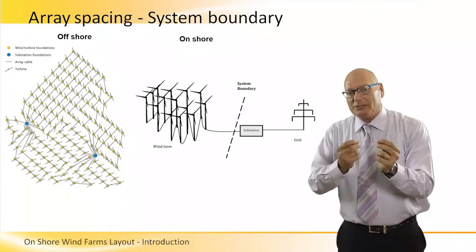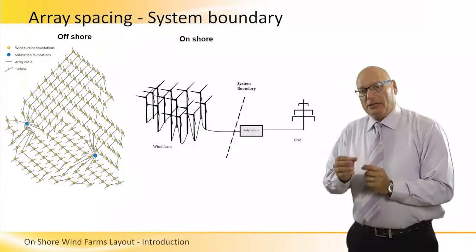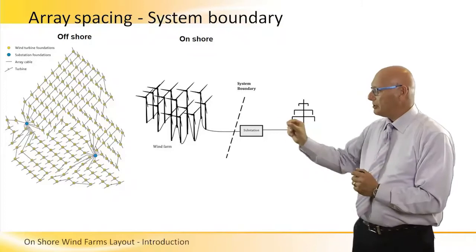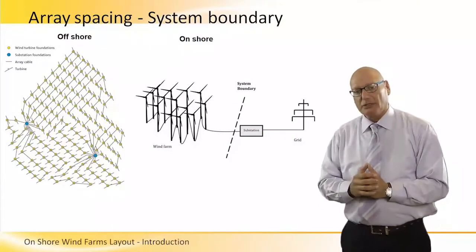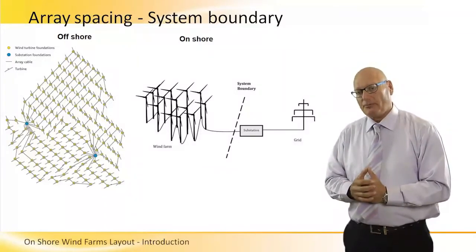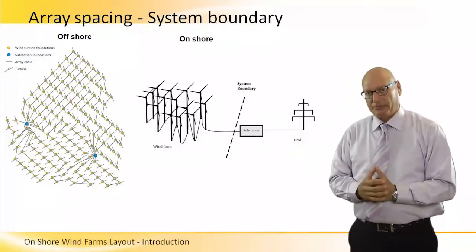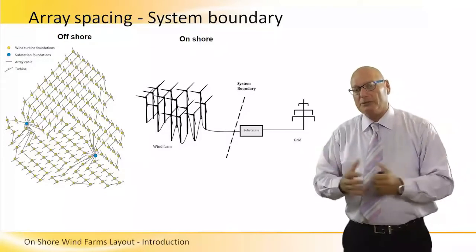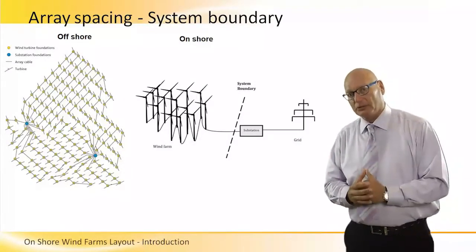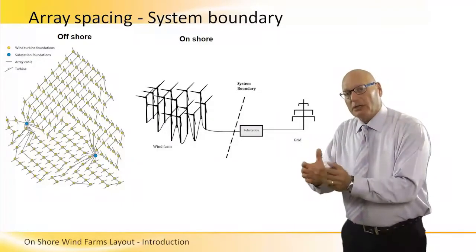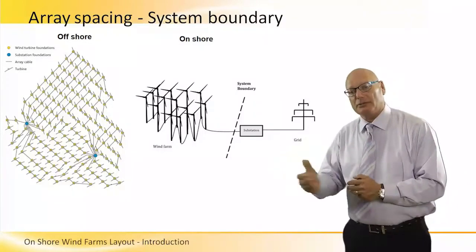We compare here array spacing of two families: one offshore and one onshore. In the offshore array spacing, we see two substations symbolically identified as two brown and two blue circles, located somewhere in the middle of the array. Onshore is different — onshore we have an array boundary, and the substation is beyond that boundary. The substation is just outside the boundary and connects out to the grid.